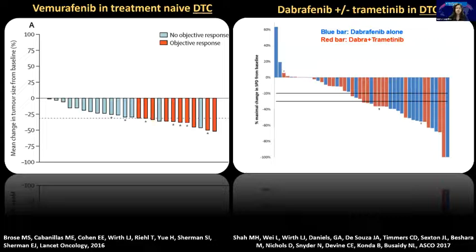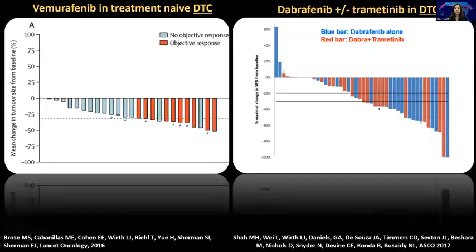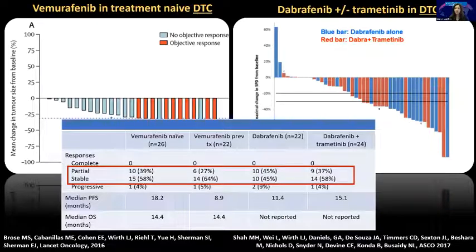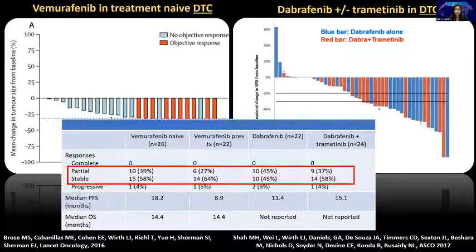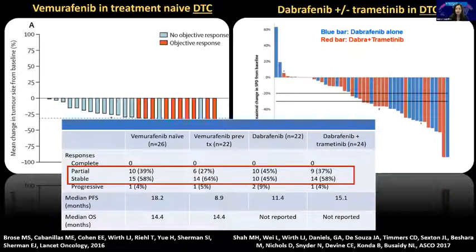BRAF inhibitors in DTC have been studied extensively. We did the vemurafenib study published in 2016 and also completed the dabrafenib versus dabrafenib plus trametinib study. Response rates are on the order of about 30–45%: 20% for previously treated, 27% for treatment-naive, 39% with vemurafenib, a little higher with dabrafenib and dabrafenib plus trametinib. But you don't see the really high response rates that you see in ATC.